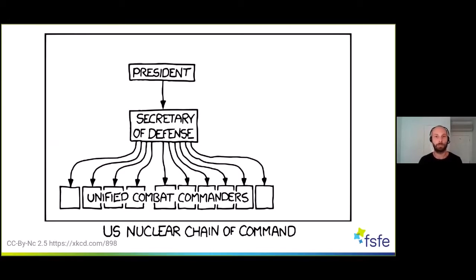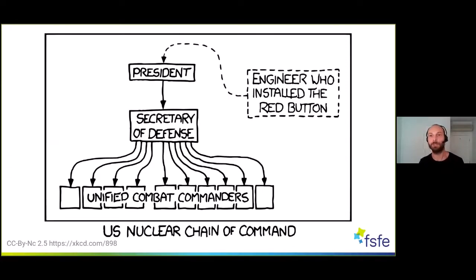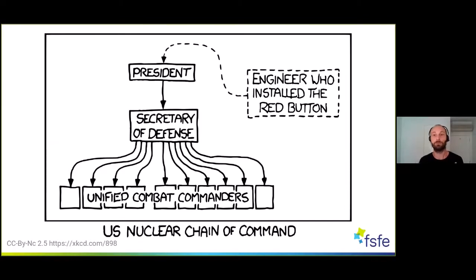To give you an impression of why free software is so important, especially for governments, I have this comic here. I guess you're more or less all familiar with the US nuclear chain of command — the president, and also, very importantly, the red button. The main question is: who installed the red button? How does it look? Is it really following the chain of command, or does it do something else? It's crucial that it is transparent and that everybody can check what the red button does. This is also true for free software — transparency is one of the most important things.